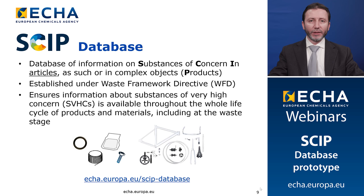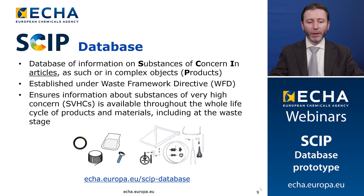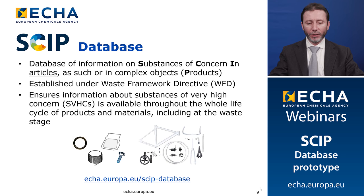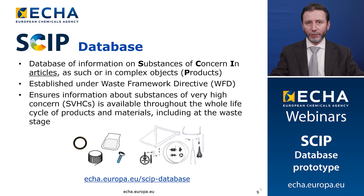An article is an object which during production is given a special shape, surface or design, which determines its function to a greater degree than does its chemical composition. For example, an O-ring, a wire, a bolt or a packaging bag are articles under REACH. At the same time, many components of a complex object are also articles — for example, the components of a bike are articles.